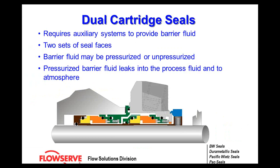This is another variation of a cartridge design in a dual orientation. Dual seals require an auxiliary system, so you must have barrier fluid in and out — it's simply two mechanical seals, one inside and one outside.